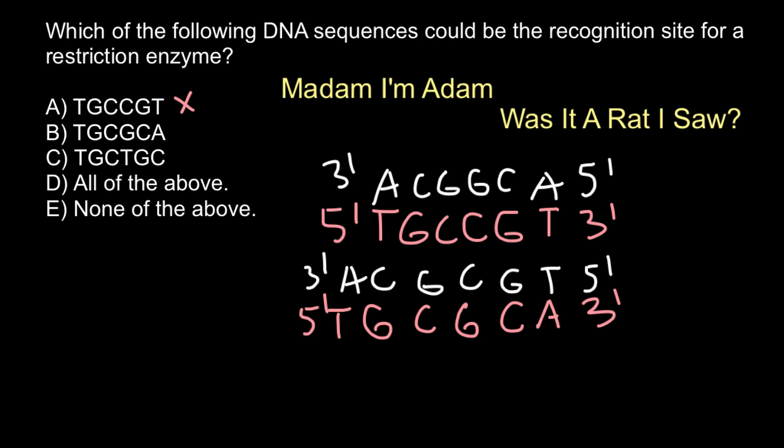This is going to be a type 2 restriction enzyme — it requires such a palindromic sequence as its recognition site. Now let's check answer C, which is the sequence T-G-T-G-C-T-C-T-C-T-G-C, with five-prime and three-prime ends marked.